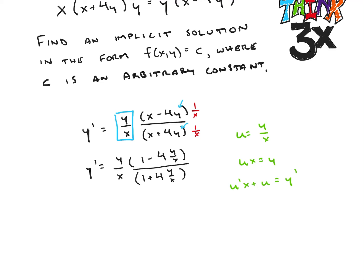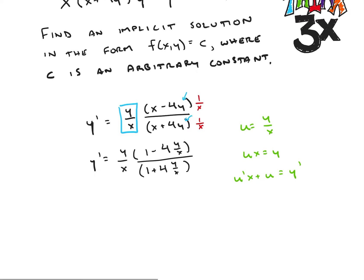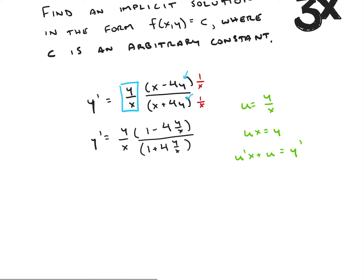All right, so let's go ahead and try to make this substitution in here. So plugging it in, I'm going to get u prime x plus u is equal to u times 1 minus 4u over 1 plus 4u.